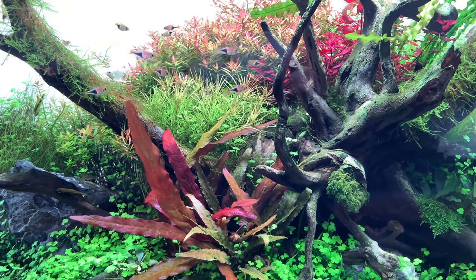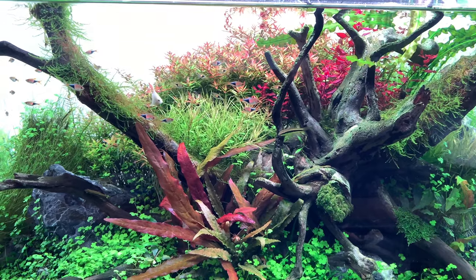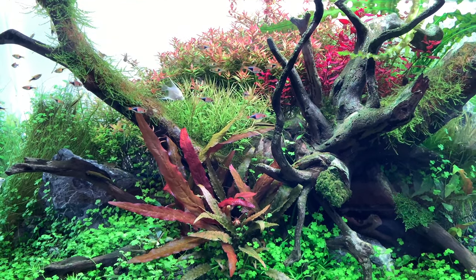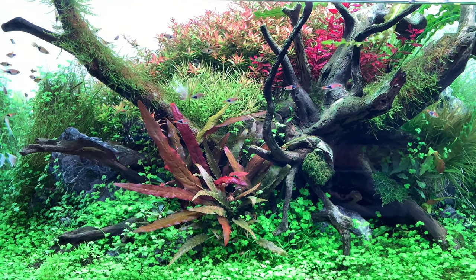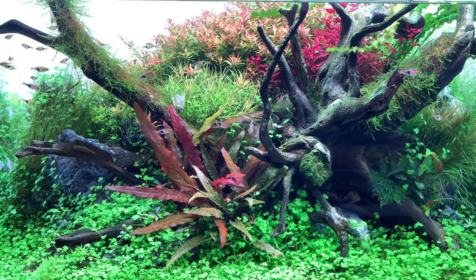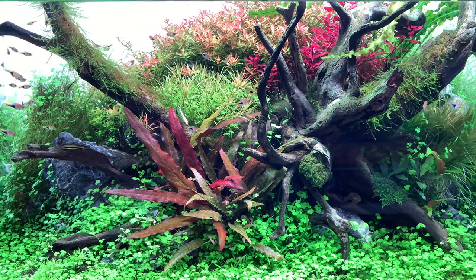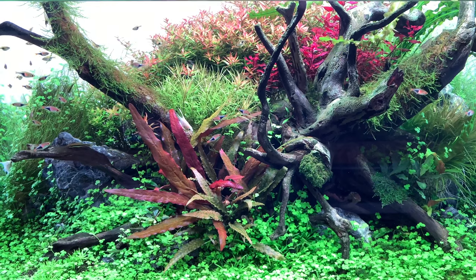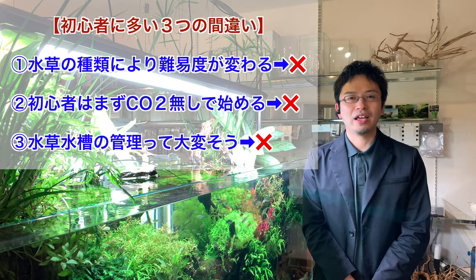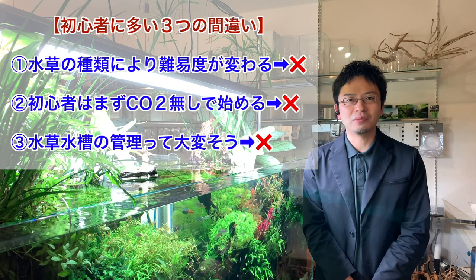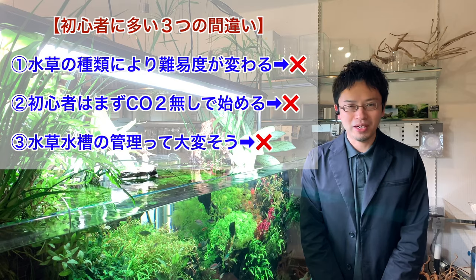For some period of time after you set the equipment, the plants will grow beautifully regardless of their type, so difficulty levels do not have any correlation to plant types. If you had plants that grew and didn't in the past, the issue was caused by things such as lighting, carbon dioxide, filters, substrate, and soil. Issues regarding plants that grew and didn't revolve around equipment, so there is no such concept as difficulty levels.